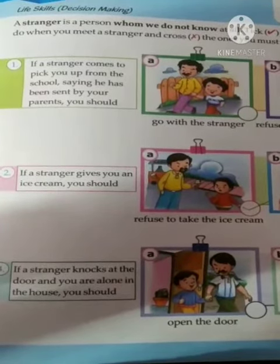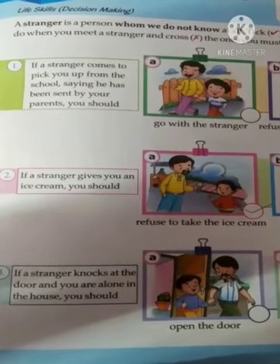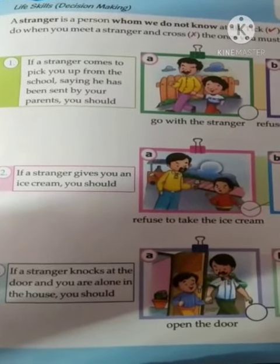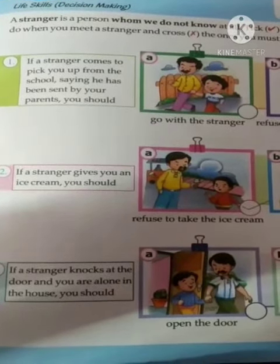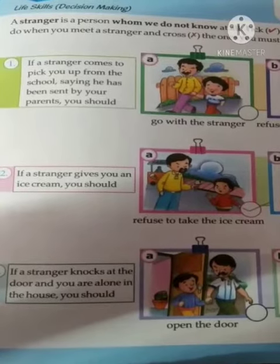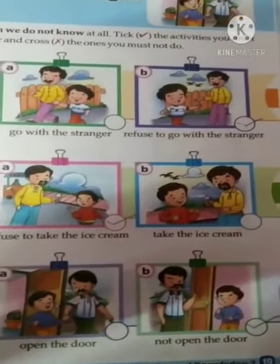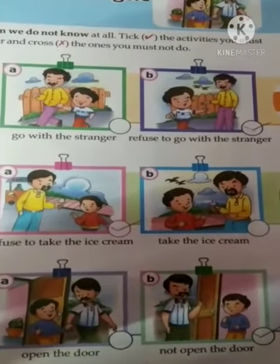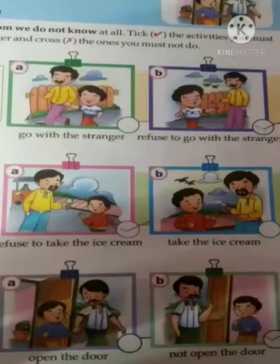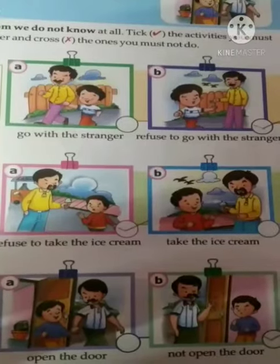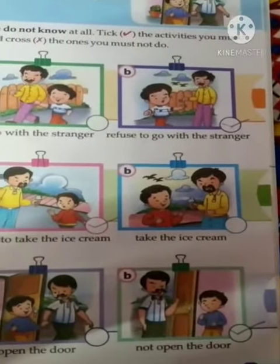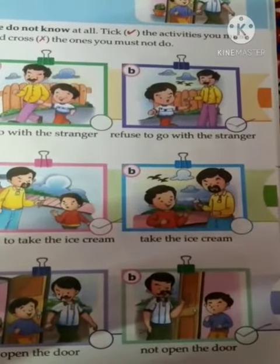Second activity: if a stranger gives you an ice cream, you should refuse to take it. Hume kabhi bhi usse ice cream nahi lena chahiye. Option A — take the ice cream — is wrong. The correct option is to refuse.